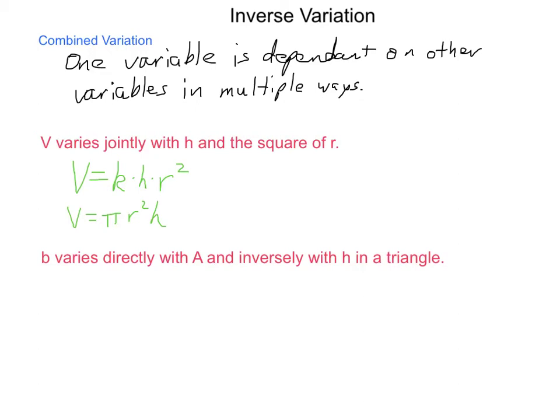Now, our next one, b varies directly with A and inversely with h in a triangle. So, looking at the pieces, we have b varies directly, so k times A, varies directly with A and inversely with h. So, inverse variation shows that we are dividing by h. And this is in a triangle.